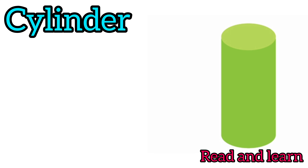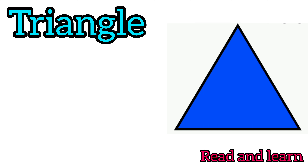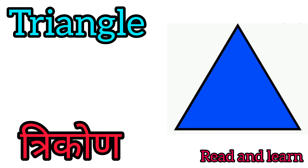Cylinder — cylinder means Belna Kar. Triangle — triangle means Tricon.